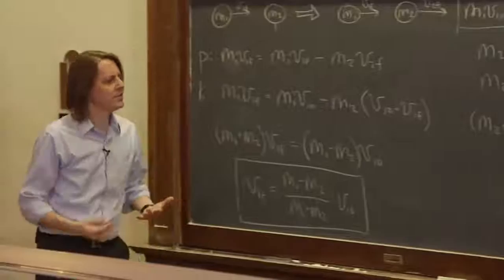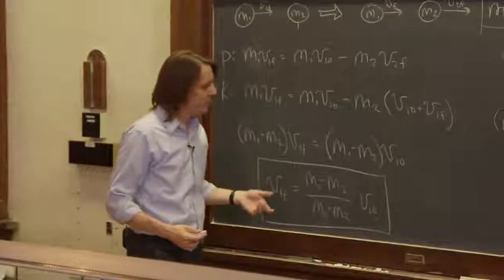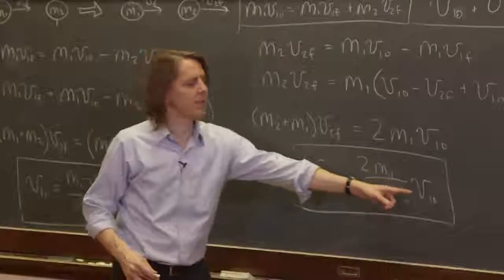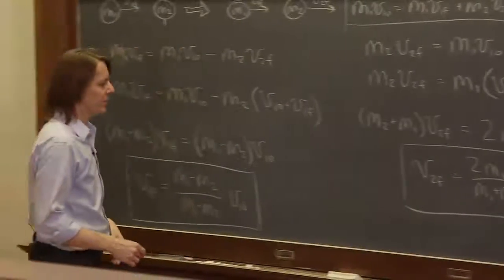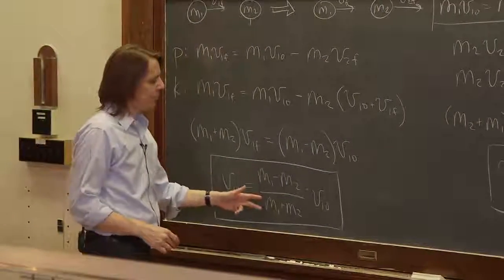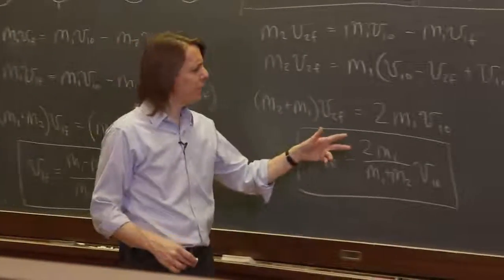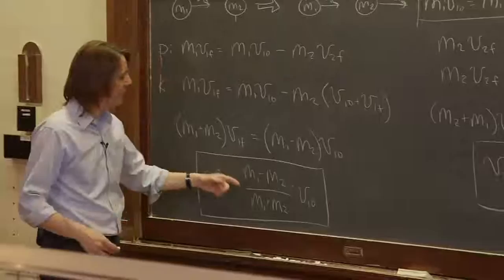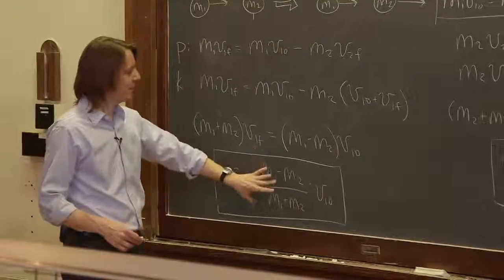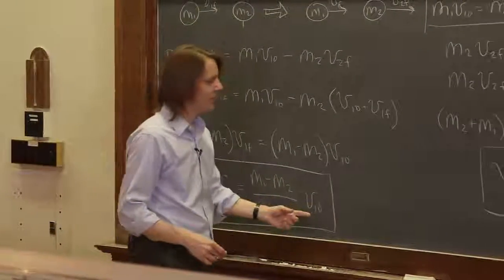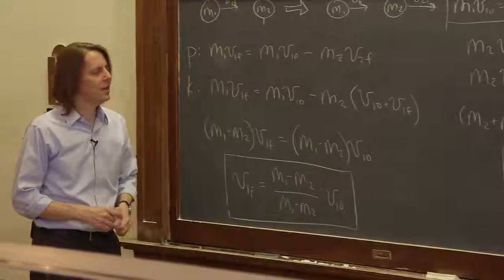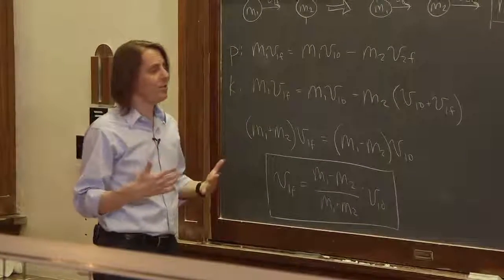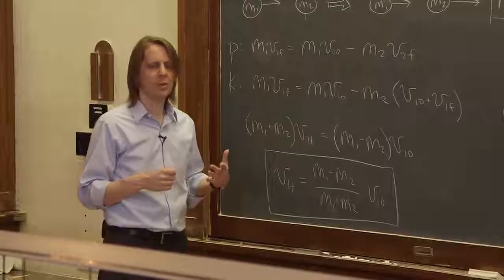So in both cases the final velocities are some fraction times the initial velocity of the first mass. For v1f it's the difference in masses over the sum; for v2f it's two times the first mass over the sum. Notice the units always work out — it's mass over mass, which is unitless, multiplied by velocity, giving velocity.